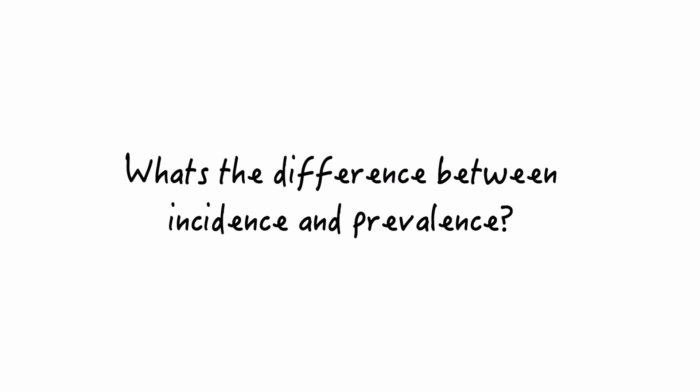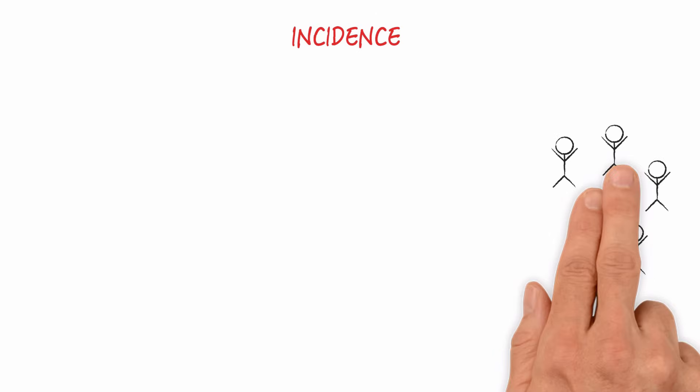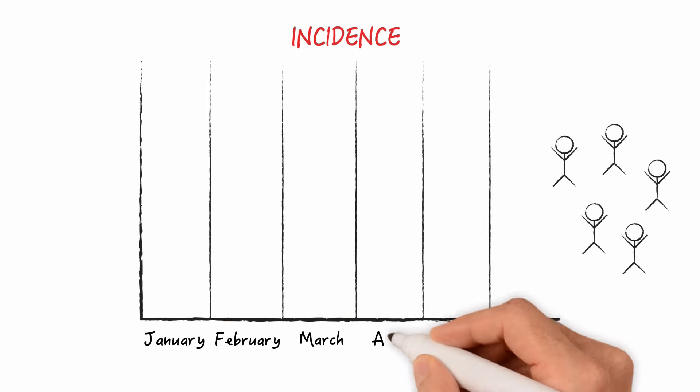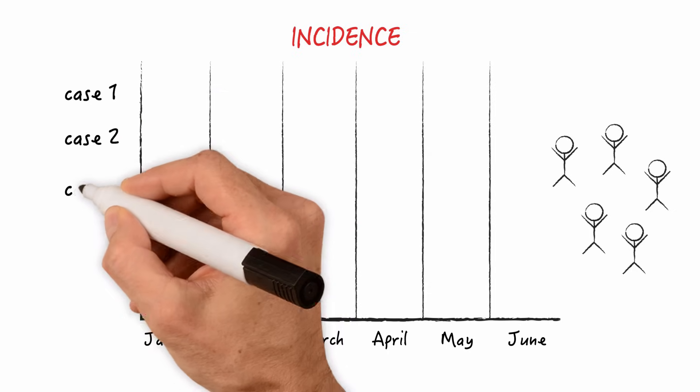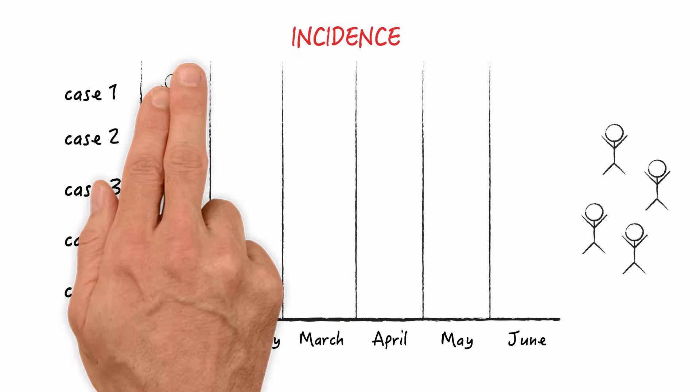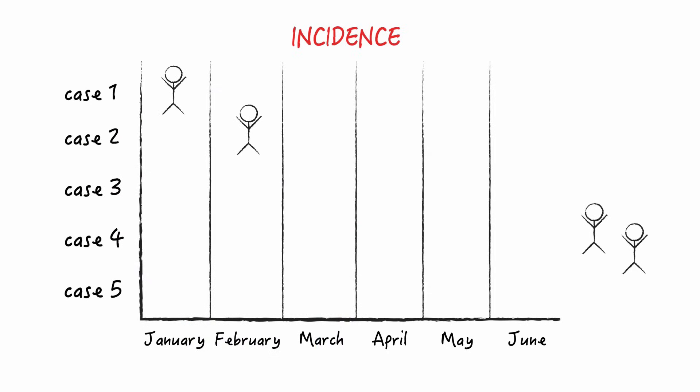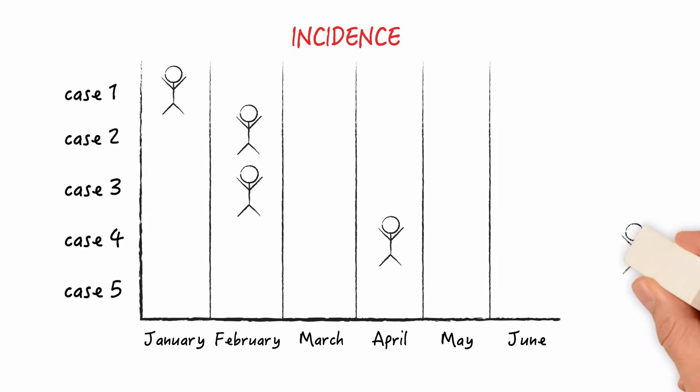And what's the difference between incidence and prevalence? Let's take a group of five people who develop tuberculosis over a period of six months. One develops the disease in January, two in February, one in April and one in May. So ignoring the denominator for now, the incident cases in February for example would be two. Or in other words, two would be the numerator of the incidence rate for that month. And it would be one for the months of January, April and May.